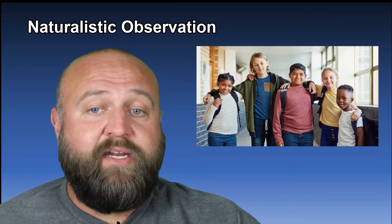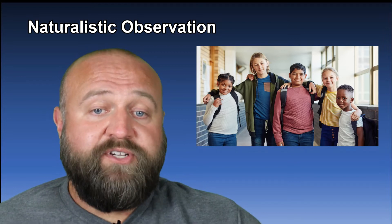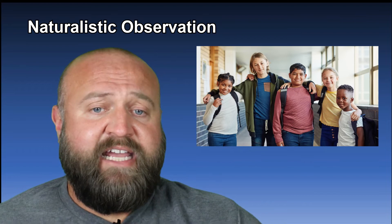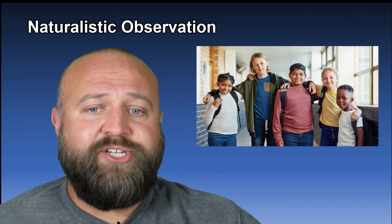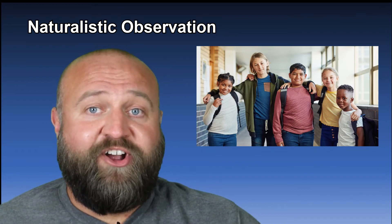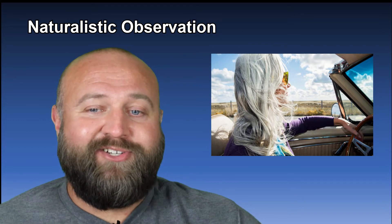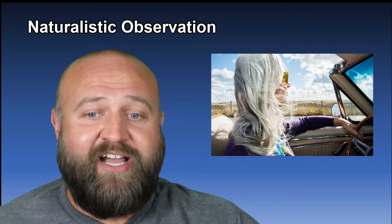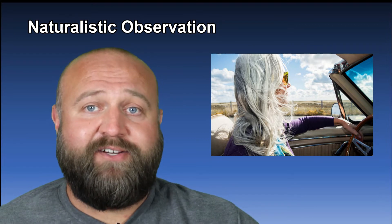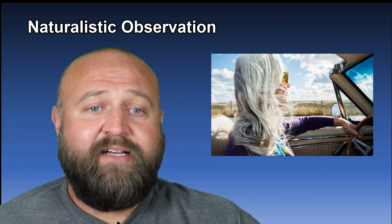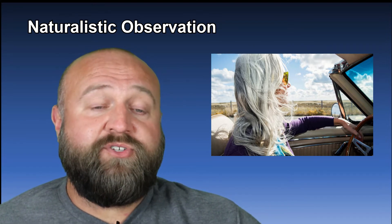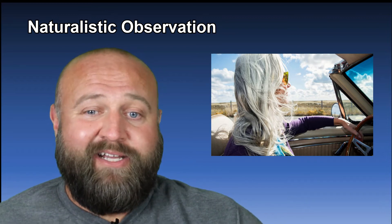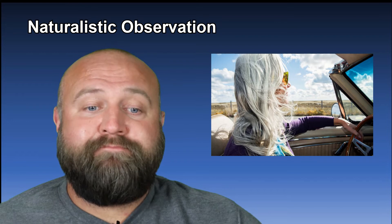There are two main issues with naturalistic observations. The first is that sometimes you can't observe people in their natural setting. For example, if I wanted to do a naturalistic observation of how people drive a car, I can't just put a researcher in a car with someone and watch as the person is texting and driving and doing something really dangerous. So sometimes what we have to do is recreate that setting in a lab — maybe do a driving simulator or something like that.